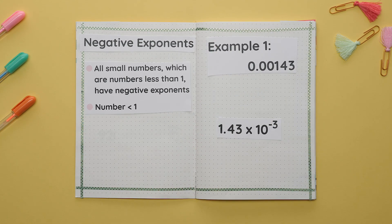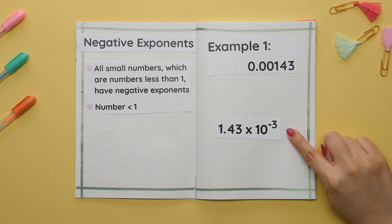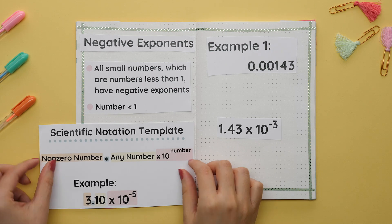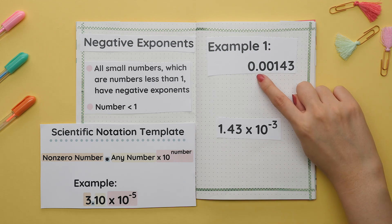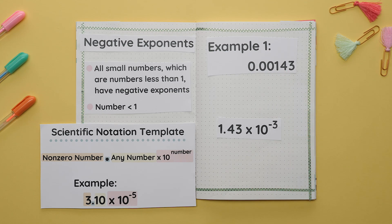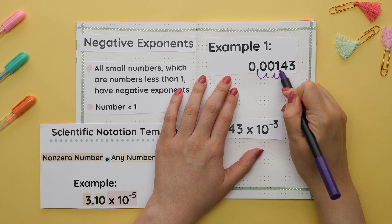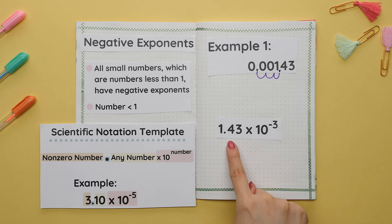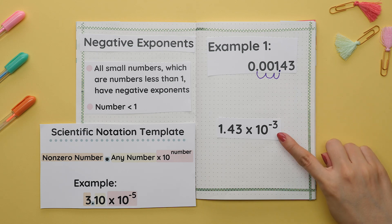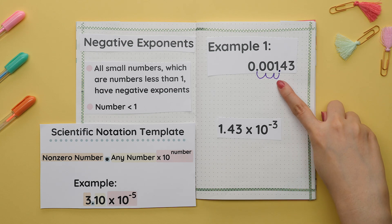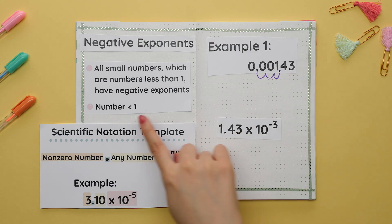For example one, we are converting 0.00143, which is in standard notation, to scientific notation. Remember this is our general template for scientific notation. We will first move the decimal place over until we reach a number that is not zero. So we will move the decimal to the right one, two, three times and rewrite the number. We now have 1.43. Since we moved the decimal over three times, our exponent will be negative three. The three comes from the total number of times we needed to move the decimal, and the negative is because this is a small number less than one.